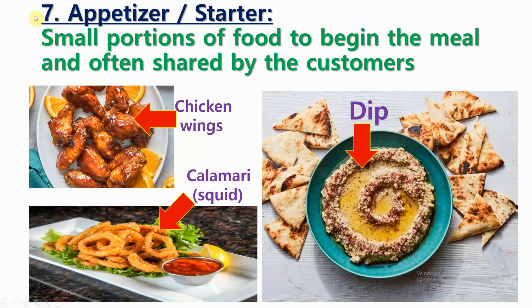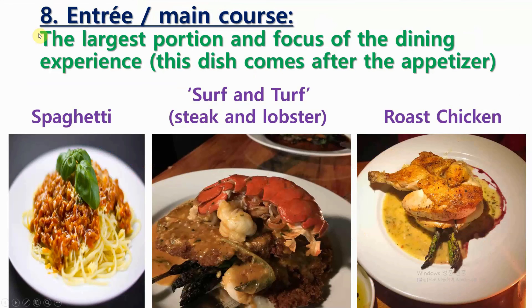Number 7: Appetizer, or starter. Small portions of food to begin the meal, and often shared by the customers. Number 8: Entree, or main course. The largest portion and focus of the dining experience. This dish comes after the appetizer.